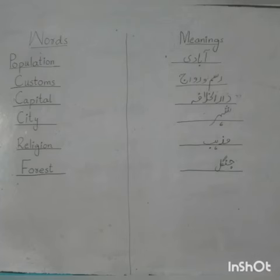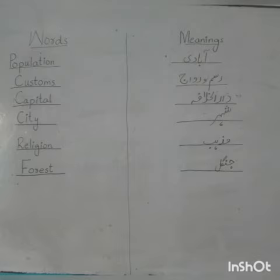Now we will learn some difficult words and their meanings. Population means Abadi. Customs means Rasmo-Rawaj. Capital means Dar-al-Khalafah. City means Sheher. Religion means Mazhab. Forest means Jungle.